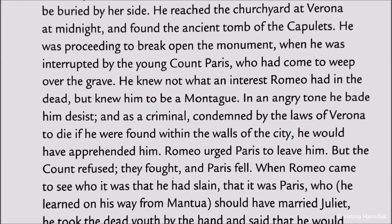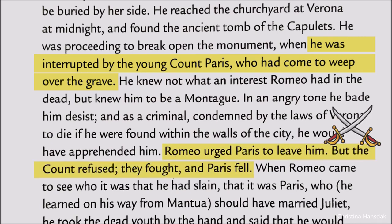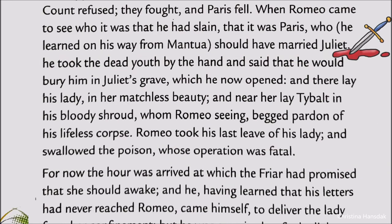At midnight, Romeo reached the churchyard at Verona. He found the ancient tomb of the Capulets, and there he was interrupted by young Count Paris, who had come to weep over the grave. Paris did not know what interest Romeo had in the dead Juliet, but he knew Romeo was a Montague and had been banished from Verona. Romeo urged Paris to leave him, but Count Paris refused. They fought, and Paris fell. Later, Romeo came to know that the man he had slain was Paris, who should have married Juliet.